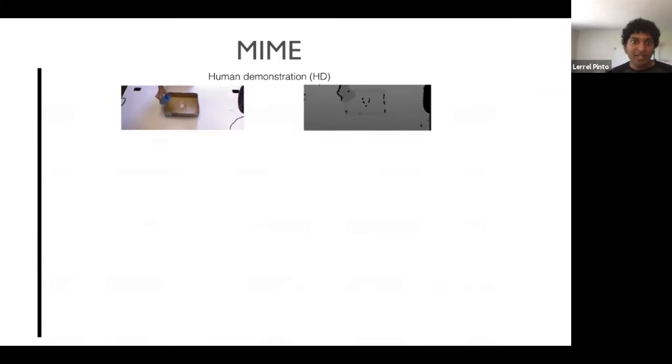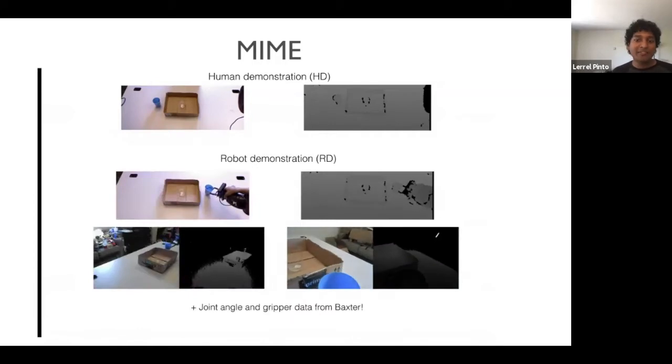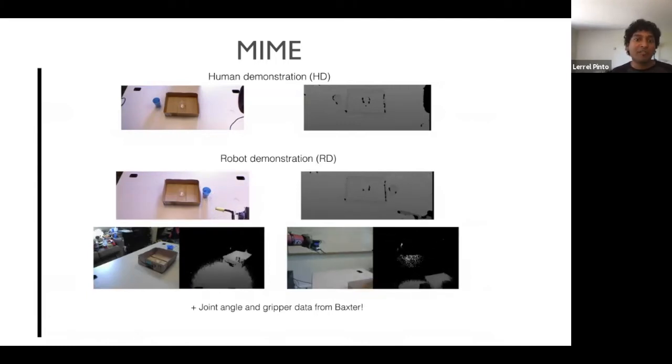So how exactly is MIME collected? First, we have a human demonstration. So in this case, it's pouring a liquid from one to the other, and the human shows how this task needs to be solved. After showing a human demonstration, the human then gives a kinesthetic demonstration for the robot. So here, the human holds the two hands of the robot, and then makes the robot solve the same task that the human had done previously. So in this way, we have an example of a human solving the task and the robot solving the same task. Note that when the human is making the robot solve the task, we record all the information, like the video streams from all the cameras, and also the joint angles and the gripper data from the robot.